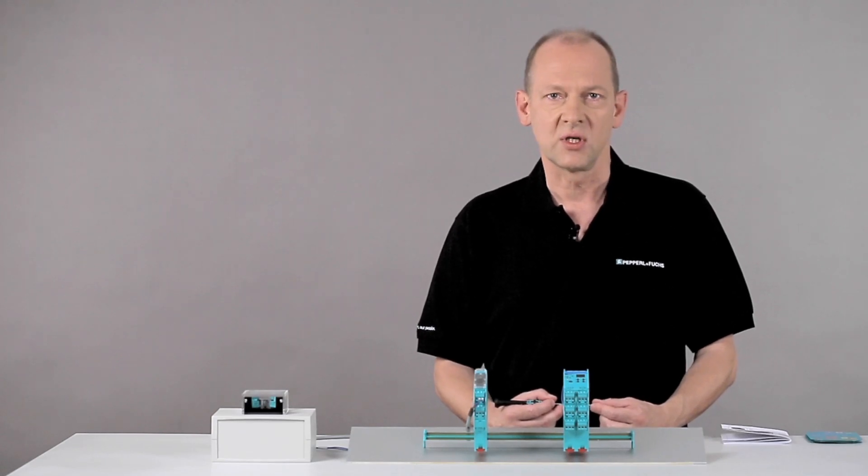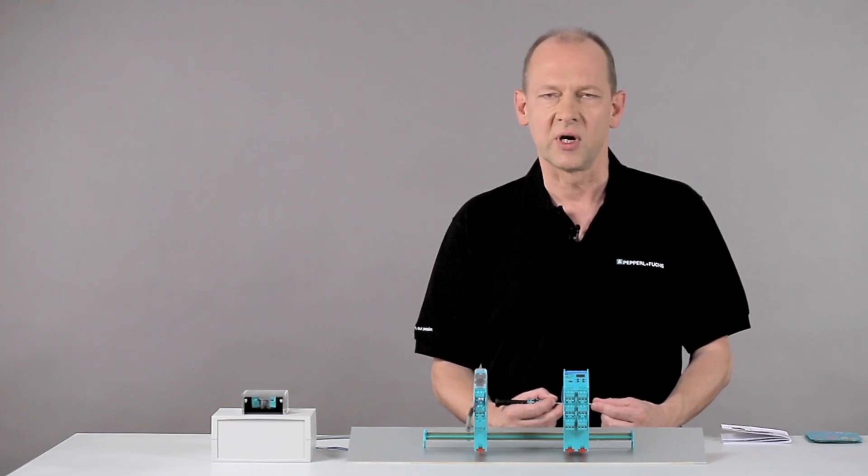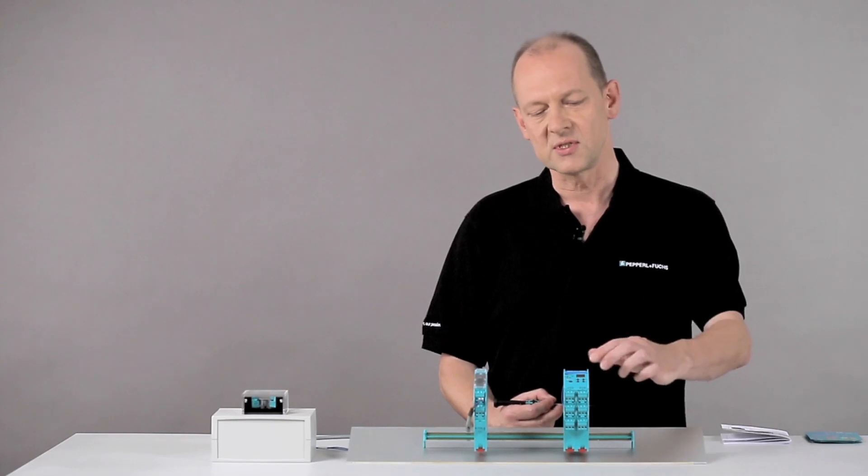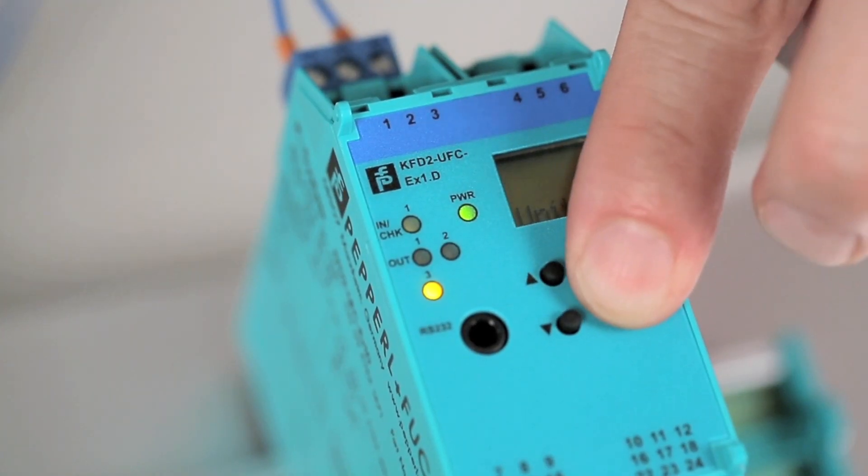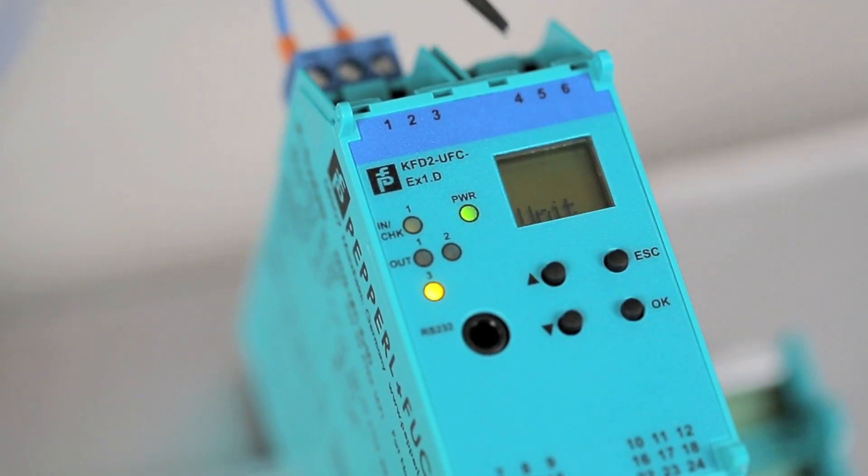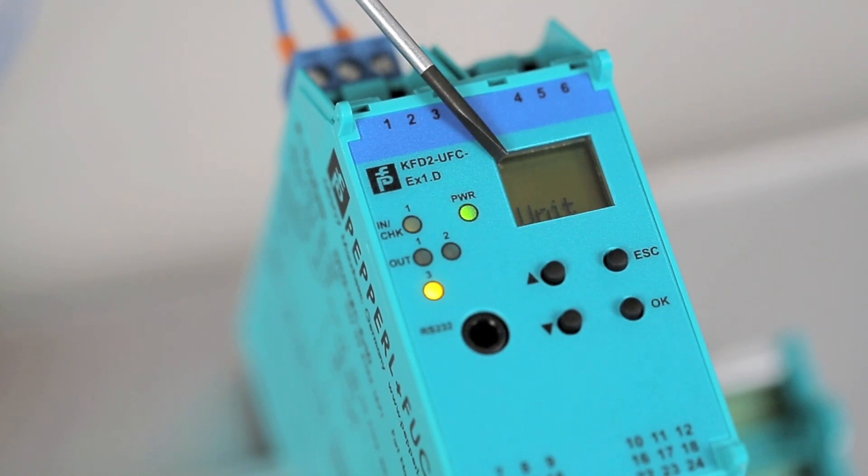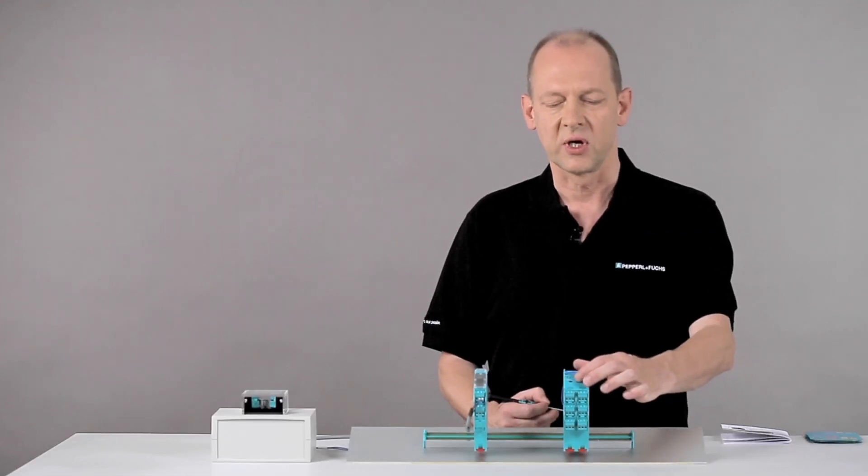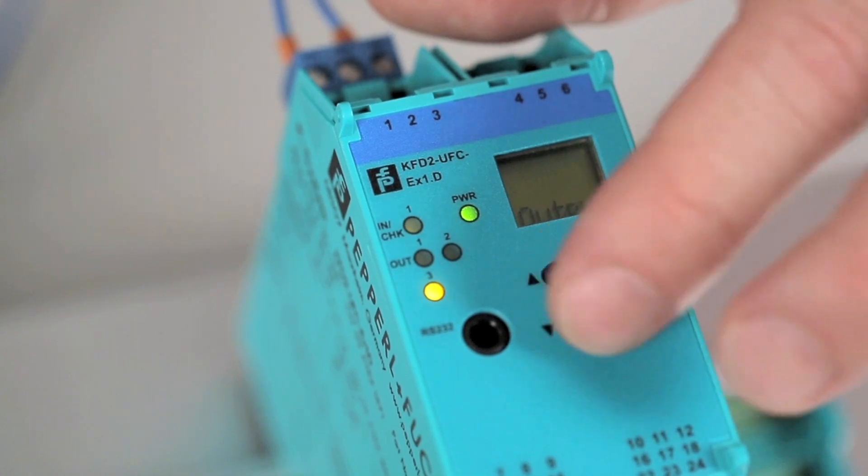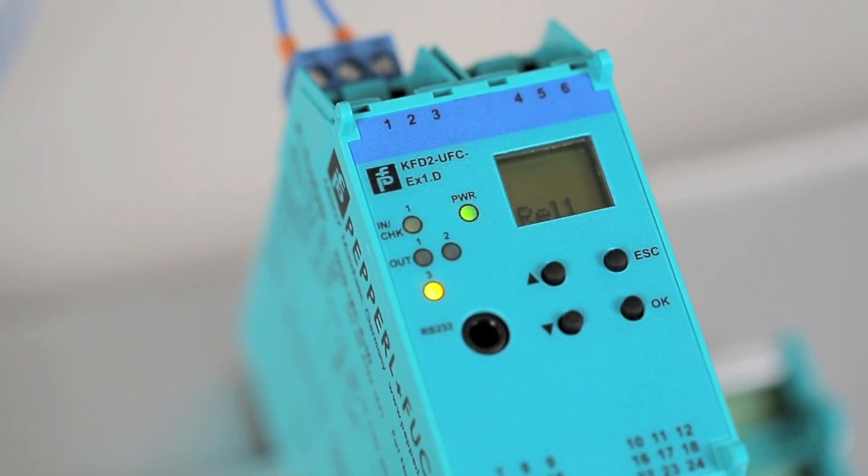For parameterization, we have to switch into the parameterization mode. For this, we press the OK and the Escape button until the word unit appears on the display. In this menu, we choose by cursor keys, the menu item output. Confirm with OK.